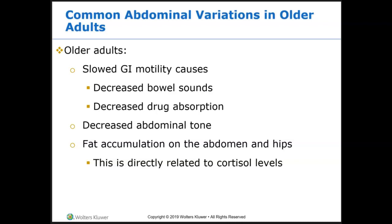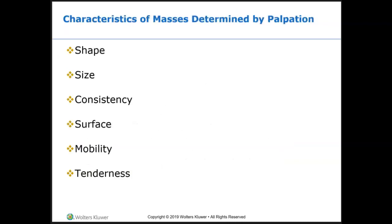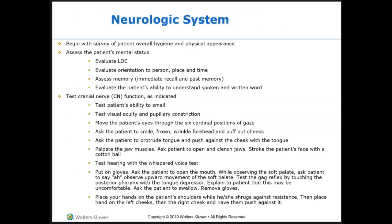As we age, we have less subcutaneous tissue and fat, which is why the elderly are often cold all the time — due to loss of heat through the skin. If masses are palpated, note the shape, size, consistency, surface, mobility, and tenderness.